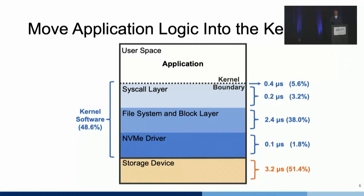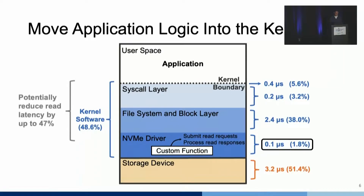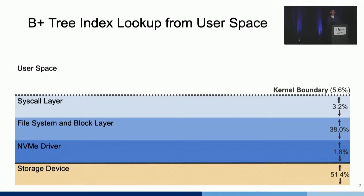Kernel bypass doesn't fit the needs of people who require isolation and want to use CPU more efficiently. Since isolation and resource scheduling are two key services provided by the kernel, the question becomes: how to reduce the kernel software overhead without bypassing the kernel? Notice that the NVMe driver itself only accounts for around 1.8% of the read latency. If the application can upload a custom function into the NVMe driver to submit read requests and process read responses, we can potentially reduce read latency by up to 47%, which is very close to the speedup achieved by the kernel bypass approach.